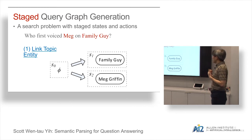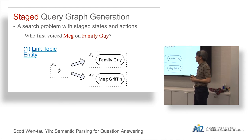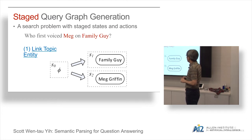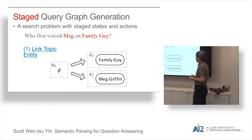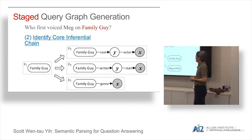We categorize the particular actions by different stages. The first stage, starting from nothing, is really trying to find the topic entity. Looking at the original question, you can find at least two different entities: Meg and Family Guy. Since we've formulated this as a search problem, we don't commit to any of them immediately. Instead, we maintain a beam and try to explore as many as possible — so from the initial state the next states would explore each entity, both Family Guy and Meg.